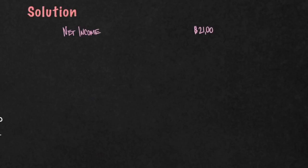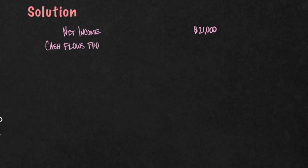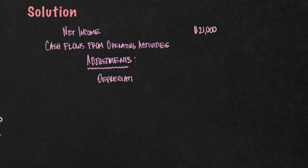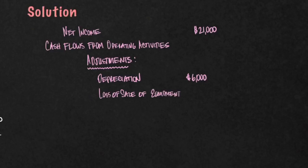Here's the solution. We have net income of $21,000. Then you want to label your Statement of Cash Flows — we're working on the Operating Activity section, so this is the Cash Flows from Operating Activities. We're going to note that the upcoming amounts are adjustments, adjusting the accrual basis of accounting to a cash basis only. The first adjustment is the depreciation expense — you want to add back the depreciation of $6,000 per the rules. Then we had a loss on sale of equipment — you'll also want to add that back, and that loss was $500.